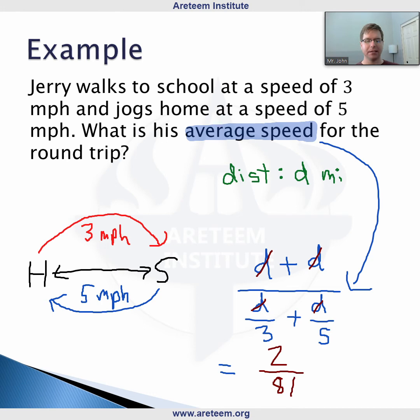So we have 8 divided by 15 in our denominator. So once we simplify this, 2 times 15 over 8, 15 over 4, we're going to get 3.75. So 3.75 miles per hour is our average speed that Jerry has walking to and from school at these different rates.